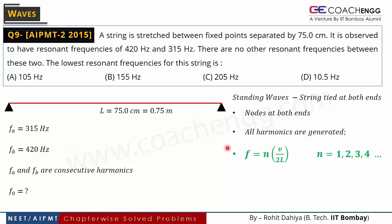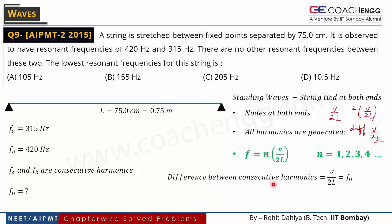For any two consecutive harmonics, e.g., V/2L and 2V/2L, the difference is V/2L — the fundamental frequency. Similarly for 2V/2L and 3V/2L, the difference is again V/2L. So the difference between any two consecutive harmonics equals the fundamental frequency. Therefore F0 = 420 − 315 = 105 Hz. So the fundamental (lowest resonant) frequency is 105 Hz.